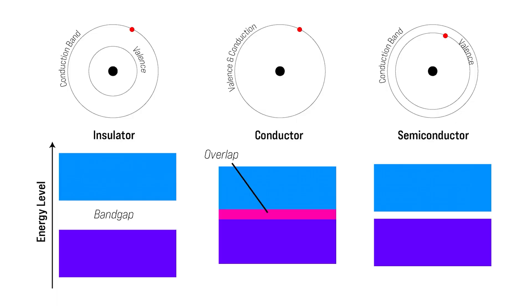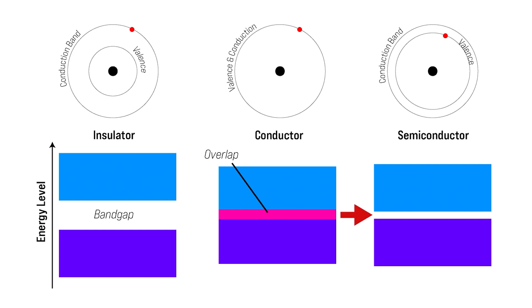If we look at the other end of the spectrum — take a copper atom for example — the valence and conduction bands overlap. So in its natural state, without external excitation, copper will freely conduct. Now the third case is our semiconductor material. On its own, it has a moderate band gap and will conduct somewhat poorly. Essentially, it's a high-value resistor.